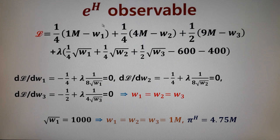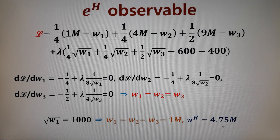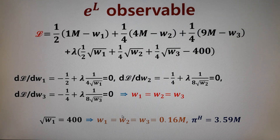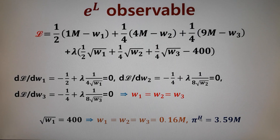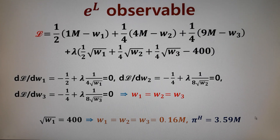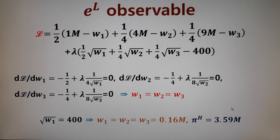If EH (high effort) was enforced by the principal, the wage level W1, W2, W3 would all be 1 million and the profit would be 4.75 million. If EL (low effort) is enforced, the wage drops significantly — W1, W2, W3 become 0.16 million. The profit for low effort would be 3.59 million. Even though wages go down, the profit also goes down because output X drops a lot. So in this ideal observable case, the profit is higher under high effort, which is why the principal would choose high effort.